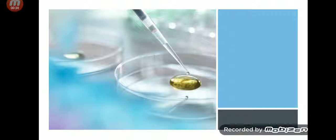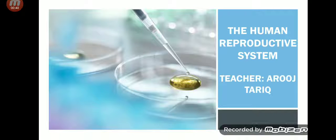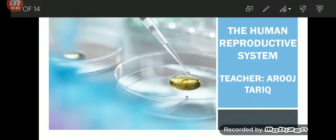Good morning, dear students. I hope you all are fine and remaining in quarantine due to the coronavirus outbreak. Today we are going to take our next lecture. If you have already seen my last video, you know we have started chapter five on reproduction and development. We have taken our first topic on gametes, so now we are going to take our second topic: the human reproductive system. I am teacher Arouj Tarek.